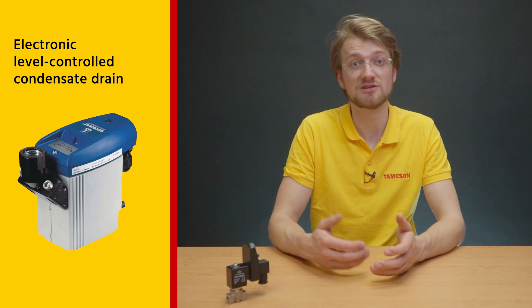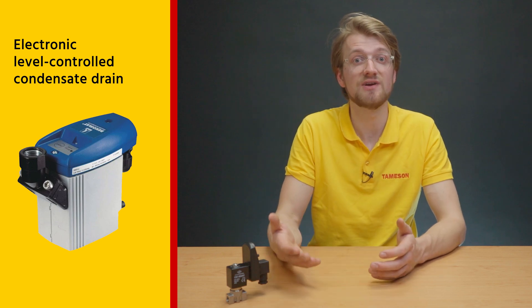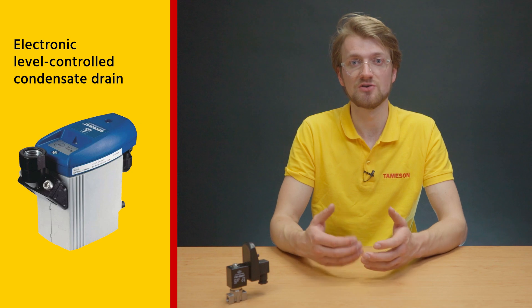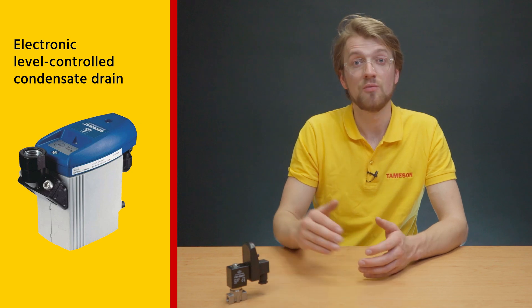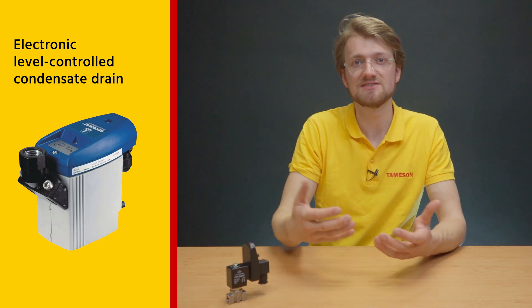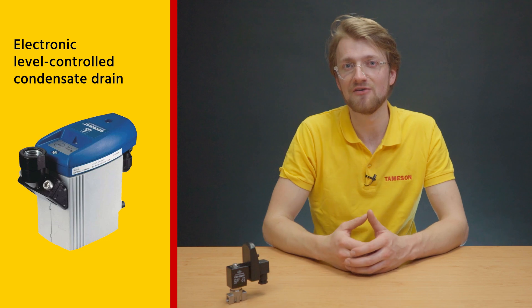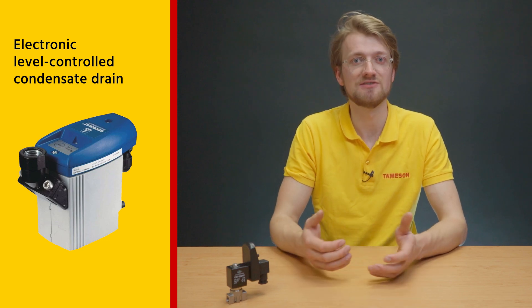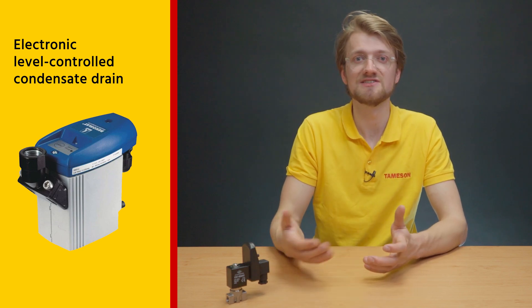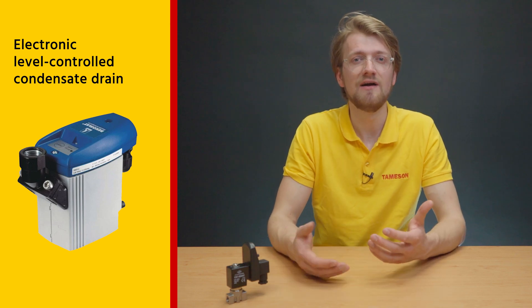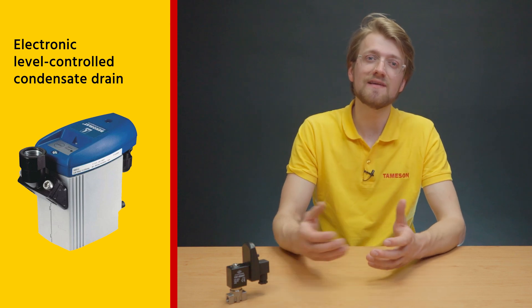Second, an electronic level controlled condensate drain. They have an electronic sensor that monitors the condensate level. When it hits an upper limit, it opens and lets the condensate out through the solenoid valve. When the level goes back down, it senses this and closes the valve until the condensate level rises again. Therefore, there's no loss of compressed air. However, they tend to be more expensive than other options.